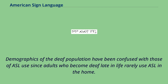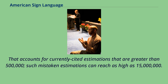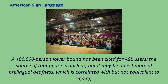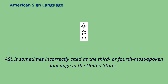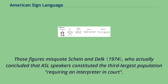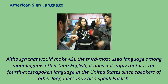Incorrect figures are sometimes cited for the population of ASL users based on misunderstandings of known statistics. Demographics of the deaf population have been confused with those of ASL use, since adults who become deaf late in life rarely use ASL in the home. That accounts for currently cited estimations greater than 500,000, and such mistaken estimations can reach as high as 15 million. ASL is sometimes incorrectly cited as the third or fourth most spoken language in the United States; those figures misquote Shine and Delk, who actually concluded that ASL speakers constituted the third largest population requiring an interpreter in court.